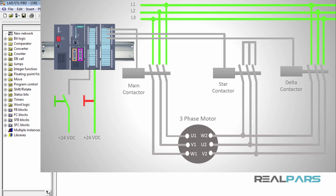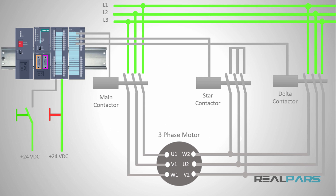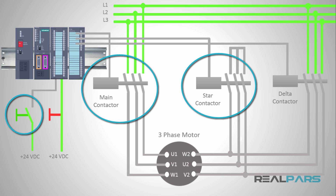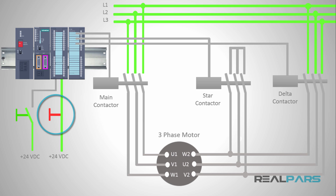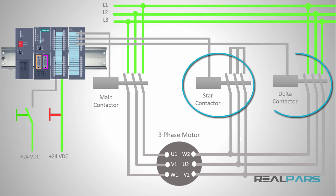Now, considering the three-phase motor and the star-delta starter I have here, I need to write a PLC program with the following conditions. When the start switch is pressed, both main and star contactors are going to be energized at the same time. After 8 seconds, the star contactor is going to be de-energized automatically and at the same time the delta contactor is going to be energized while the main contactor remains energized. When the stop switch is pressed, all the contactors are going to be de-energized at the same time. The star and delta contactor should not be energized at the same time under any situation.